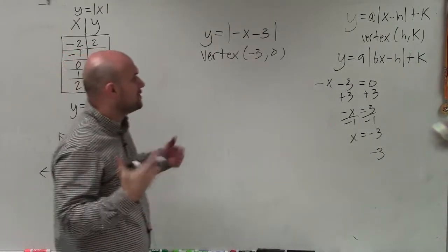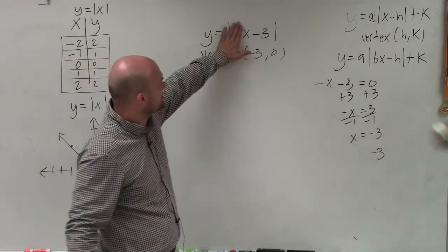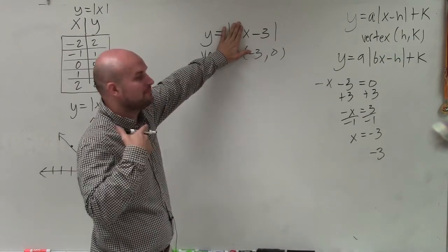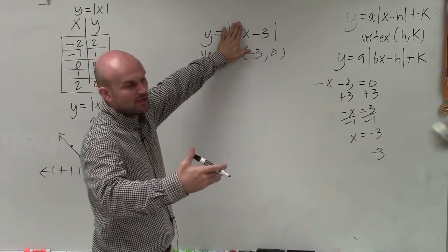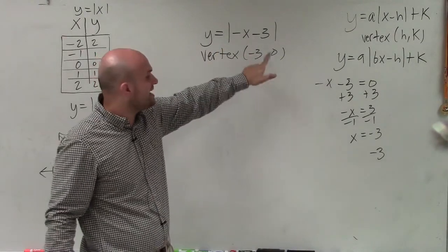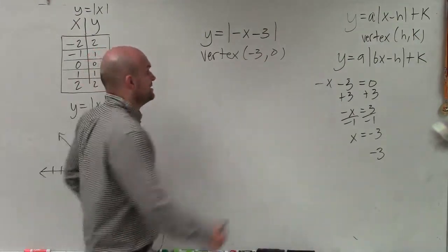So this is contrary to what we've learned pretty much before. If this was just a positive x, our vertex would be positive 3, 0. But since I'm multiplying by negative 1 times my x, it's actually going to reflect over the y-axis. And now it's negative 3, 0.